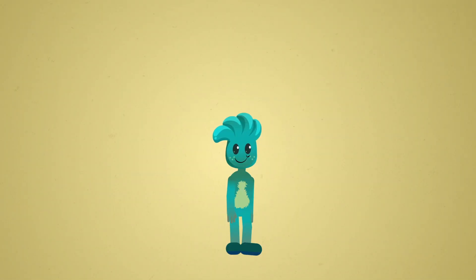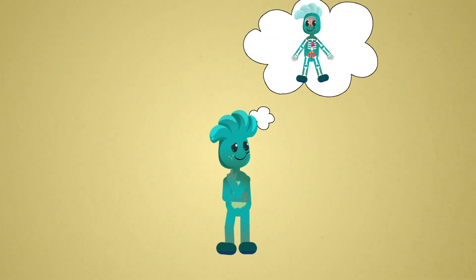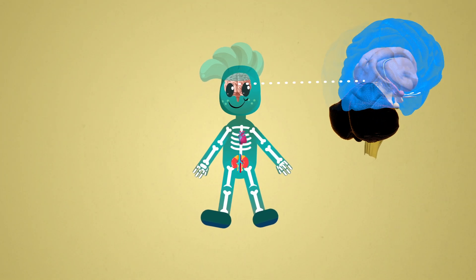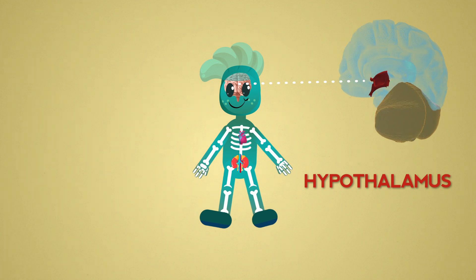We now understand the concept of the stress response. But what precisely happens in our body? From a physiological point of view, perception of stressors quickly activates a specific region, the hypothalamus.